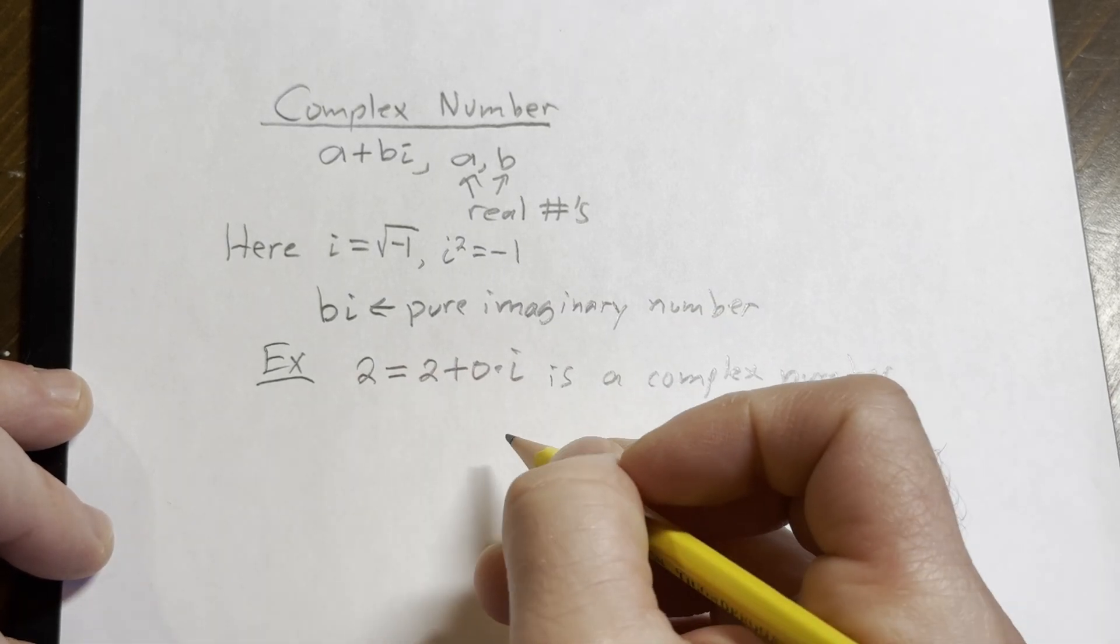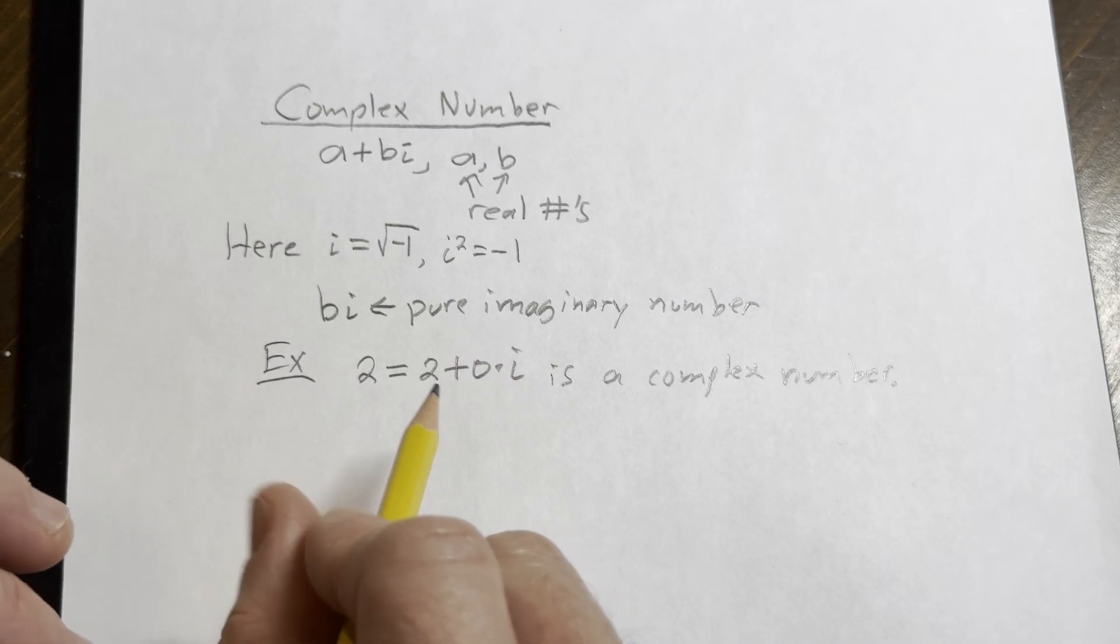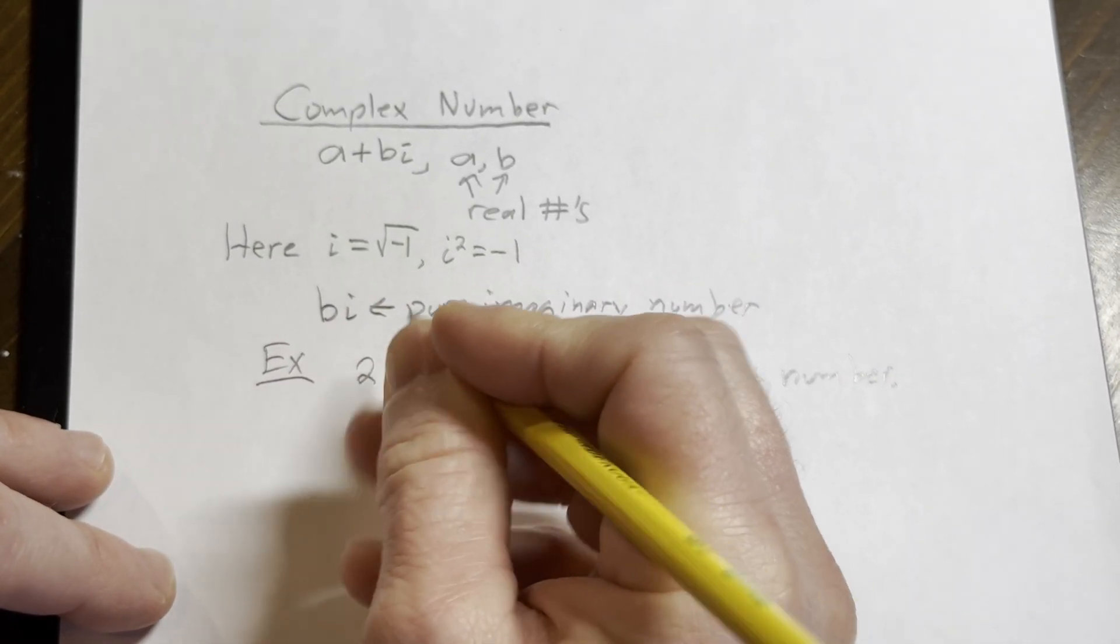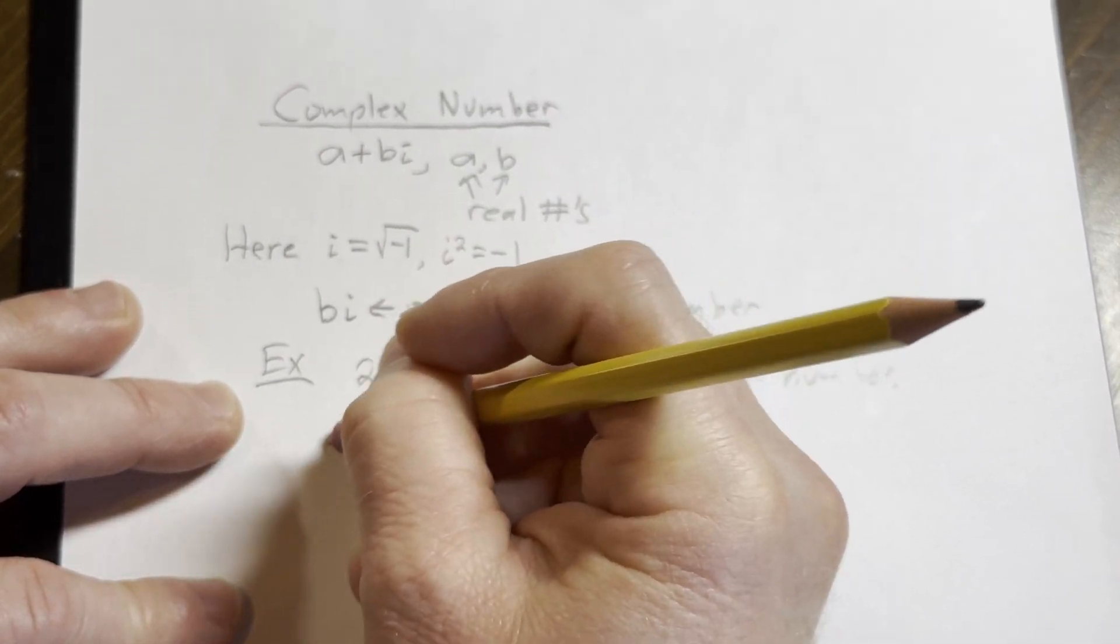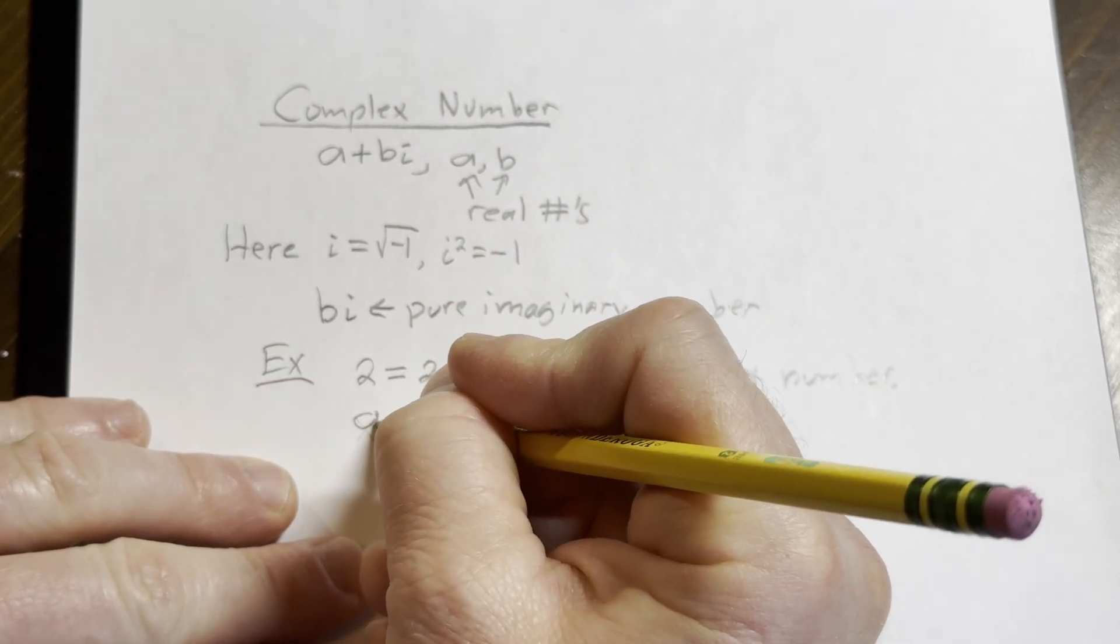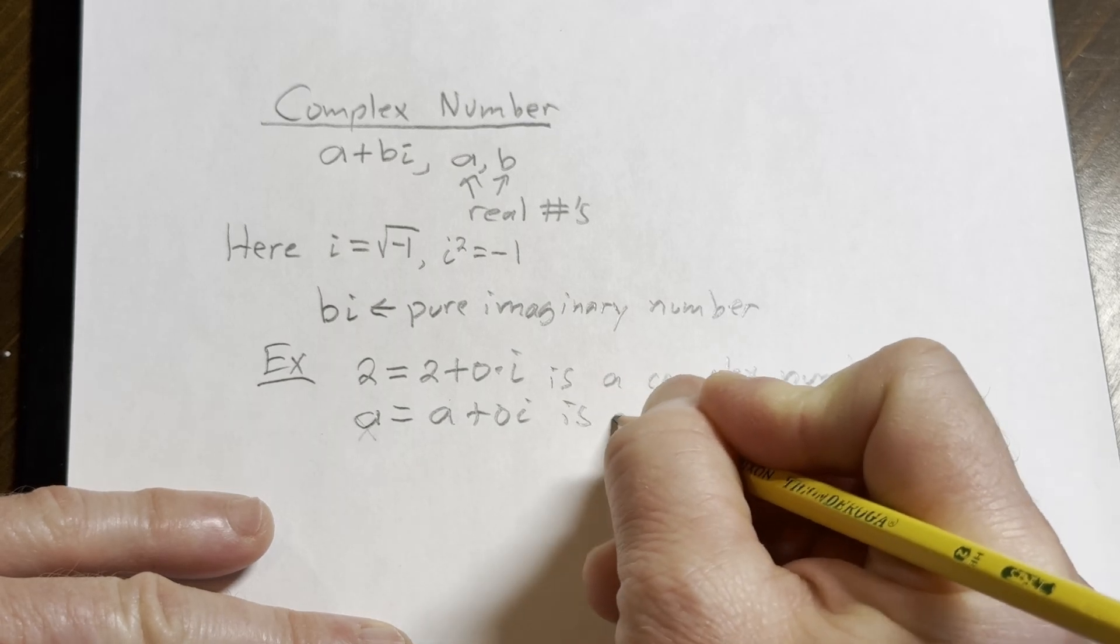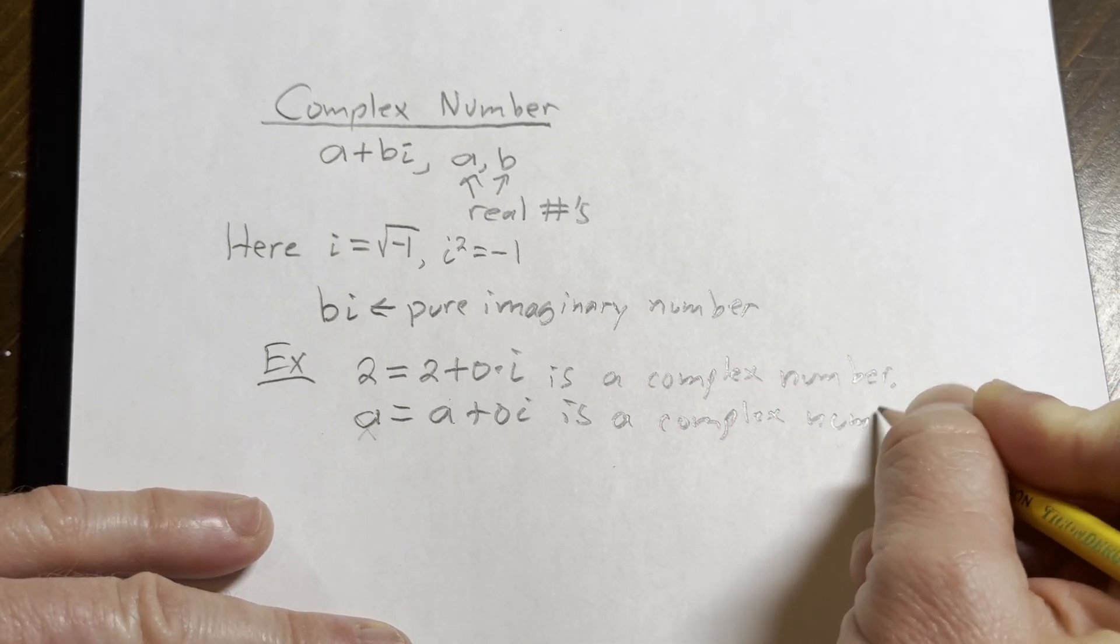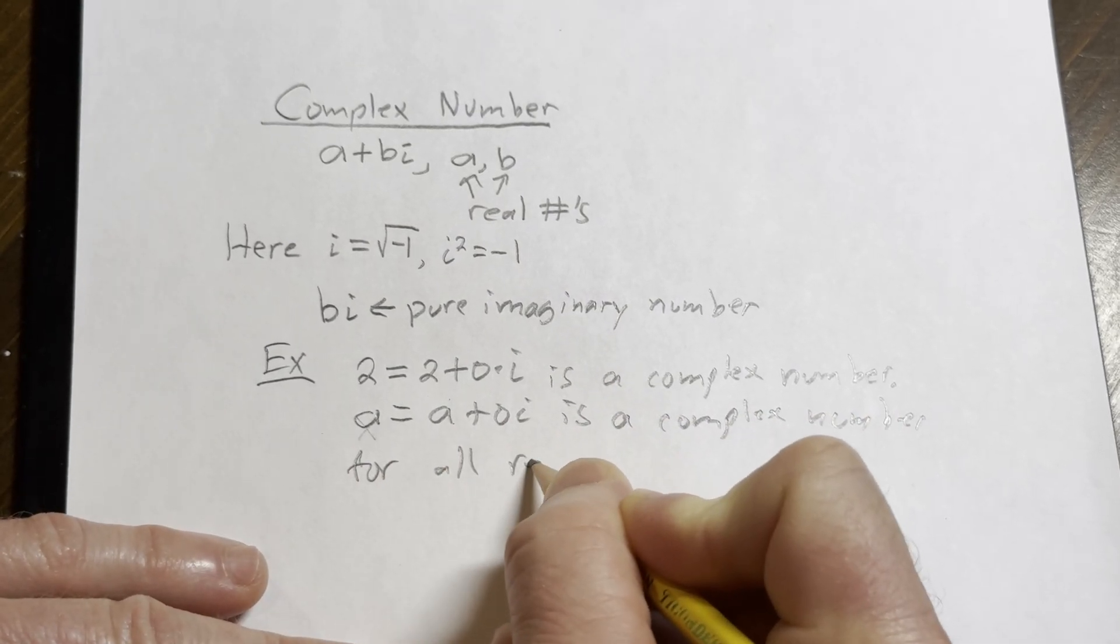In fact, there's nothing special about the number 2 for this example. We can use any number. To be in line with our notation, let's use a. For all a, we have a equals a plus 0i, so it is a complex number for all real a.